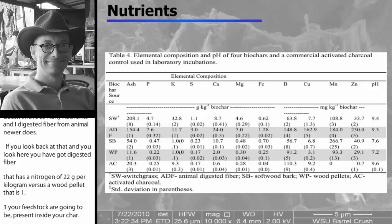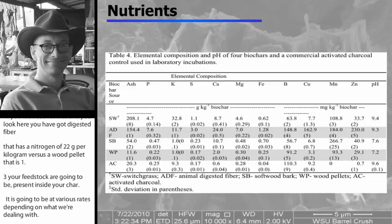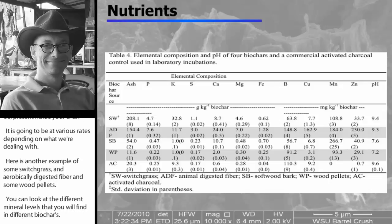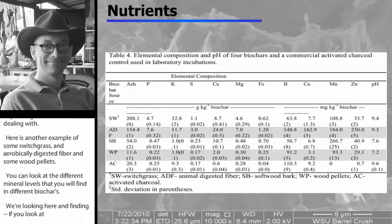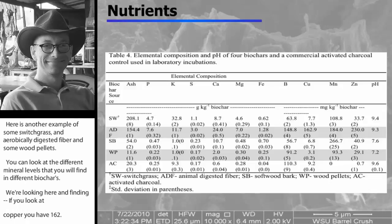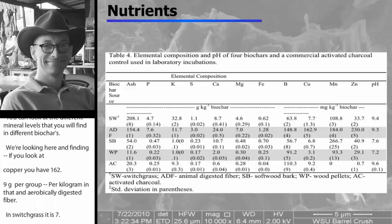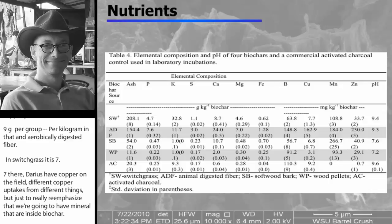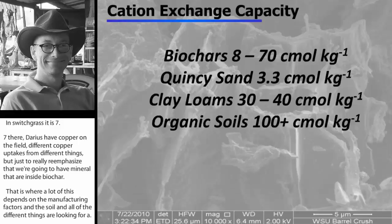The nutrients that are in your feedstock are going to become present inside your char, but it's going to be at various rates depending on what we're dealing with. Here's just another example of some switchgrass, some anaerobically digested fiber, and also some wood pellets. You can look at the different mineral levels that we're finding in different biochars. If you look at copper, you have 162.9 milligrams per kilogram in that anaerobically digested fiber, but in switchgrass it's 7.7. Looking at the differences there, dairies have copper on the field, you have different copper uptakes from different things. Just to really reemphasize that we're going to have minerals that are inside your biochar, and that's where a lot of this depends on the manufacturing factors.